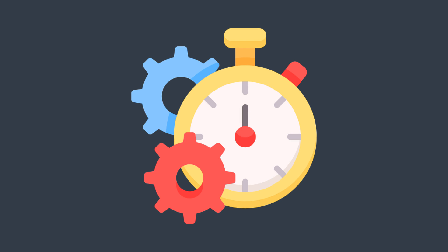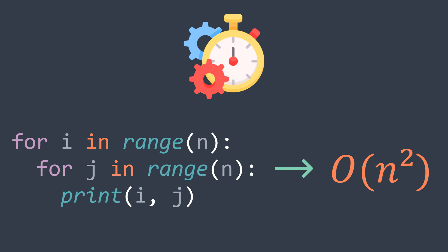When learning about time complexity, the classic example to explain quadratic time complexity is to use nested for loops, where we have a first for loop that is repeated n times, and inside it we have another for loop that is also repeated n times, and n times n is n squared. This is why this algorithm has an O(n²) time complexity.